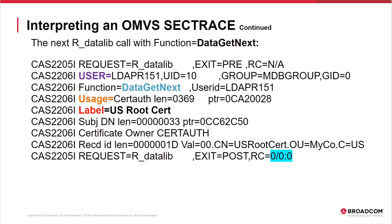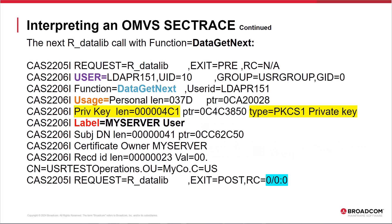Here are the next R_datalib trace entries associated with FUNCTION=DATA GET NEXT, requesting the next certificate. The last CES2205I post-trace R_datalib call with zero return codes indicates that another certificate was returned successfully. The user information and the certificate usage and label information is returned. This is the last of the three cert auth certificates in the signing chain.